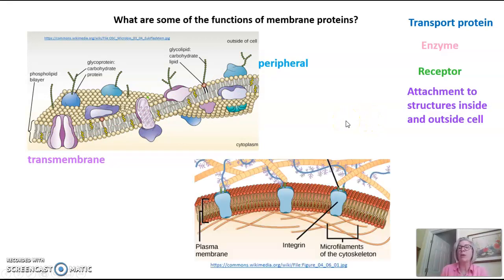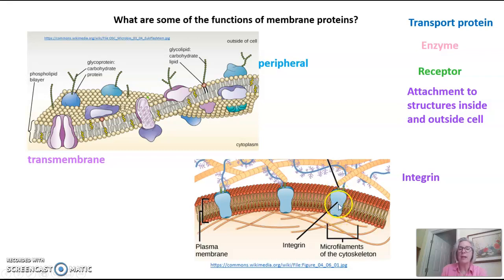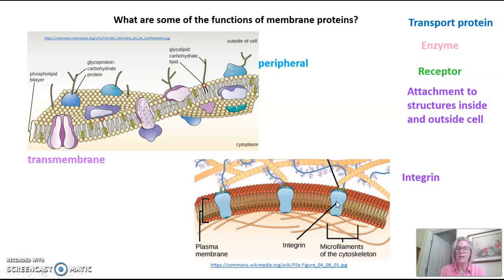You can also have membrane proteins whose job it is to attach to structures both inside and outside of the cell. A specific example is a transmembrane protein called an integrin, pictured here in blue. Integrins span the entire membrane — they attach to cytoskeletal fibers inside the cell, and they also attach to a fibrous network outside the cell called the extracellular matrix. Our cells in our body are not just floating around; they are fixed and attached in their location, and integrins are what aid cells in doing this.